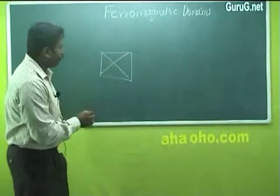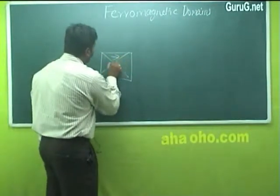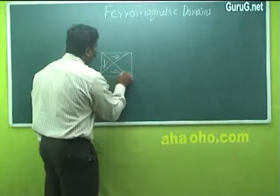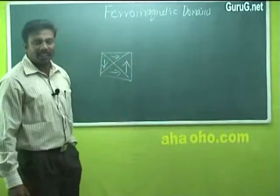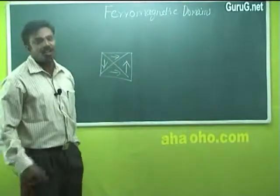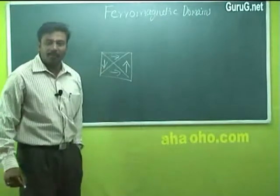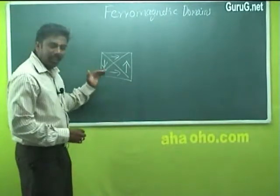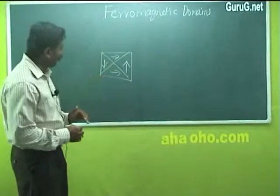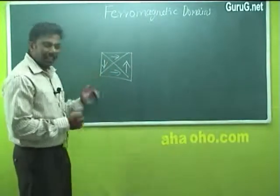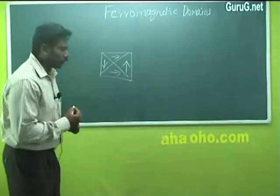In each domain, the spontaneous magnetization is in a different direction, so the net magnetization is zero. After this ferromagnetic material is placed in an external magnetic field, the magnetization occurs because of two processes.